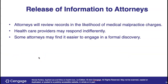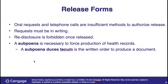Attorneys can also request information, such as in medical malpractice charges. Health care providers may respond in different ways, and some attorneys might find it easier to engage in formal discovery. Most of the time they are going to have to have a subpoena to get the information — that's the safest method because a judge signs off on it. A subpoena gathers that information rather than just releasing it to attorneys. We can't just release medical information to attorneys; they have to have a reason, and the subpoena protects the practice from unnecessary release of information.